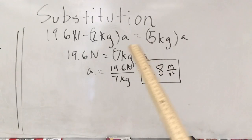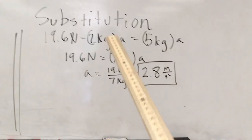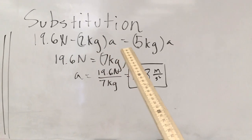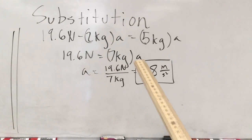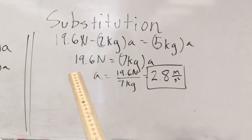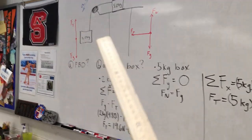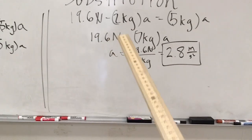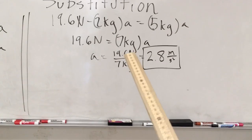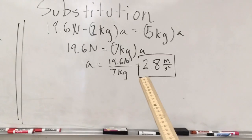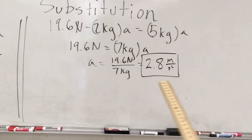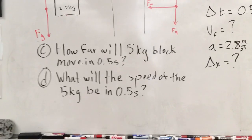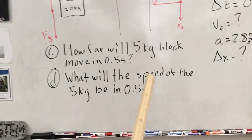We gather variables together by adding two kilograms times acceleration to the other side, giving us seven kilograms times acceleration. That seven kilograms is just the total mass of the system — five and two — which makes sense. The 19.6 Newtons comes from the falling two kilogram block, which is the force driving the whole process. Dividing force by mass gives us an acceleration of 2.8 meters per second squared.